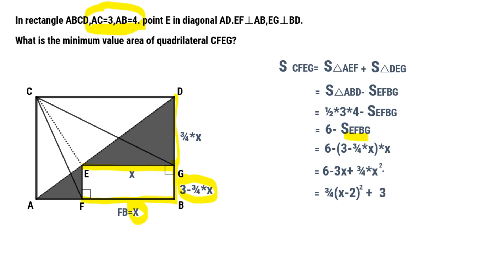Let's check this equation. Only when X equals 2, X minus 2 equals 0. We can get the minimum value is 3.